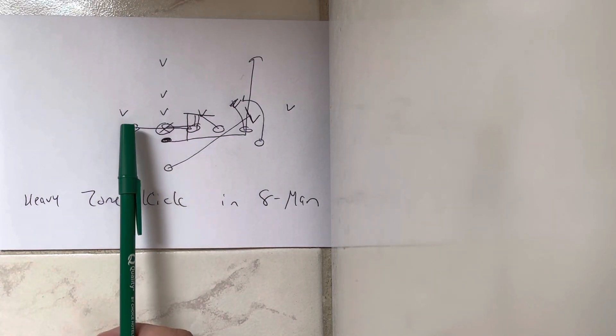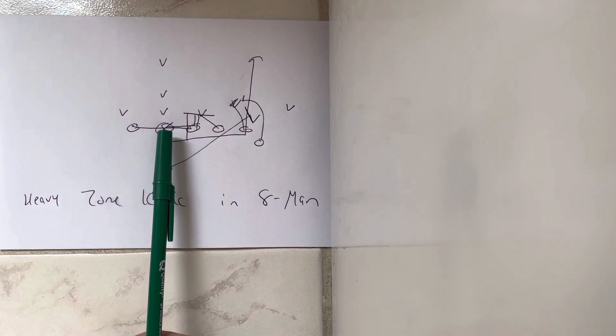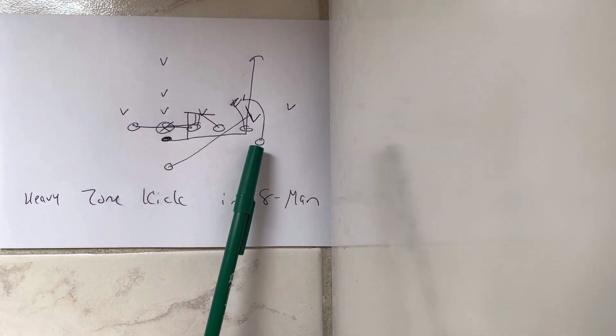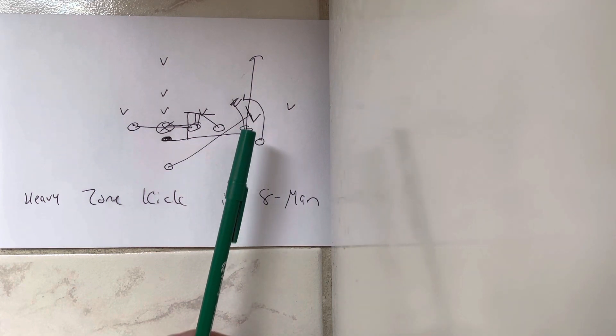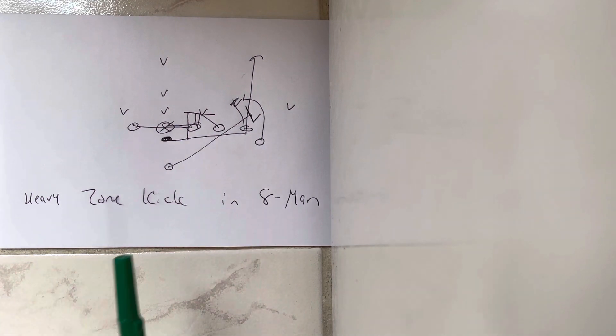You get into the heavy formation where you have an end lined up here, a center, two guards, an end. You're going to put the A back. He's going to line up a yard behind the end. His left foot is going to be on the right foot of the end about a yard off the ball, or a yard off the end.